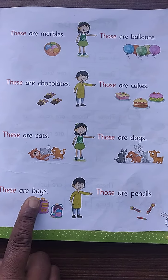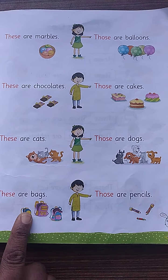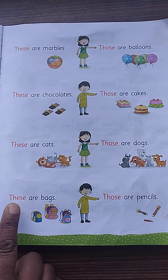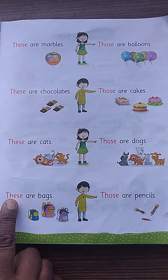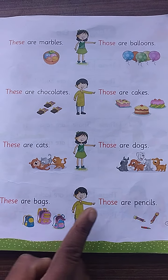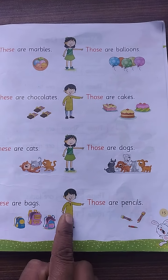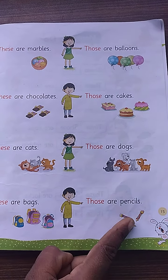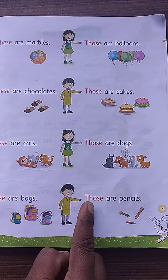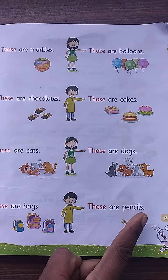These are bags. Bags are near the boy — one, two, three — three bags are there. So we use here: these are bags. Those are pencils. Pencils are far from the boy, so here use the word those. Those are pencils.